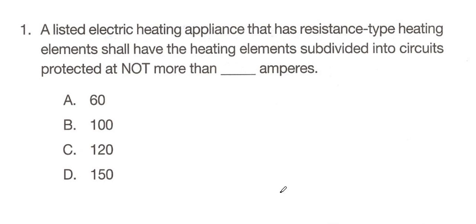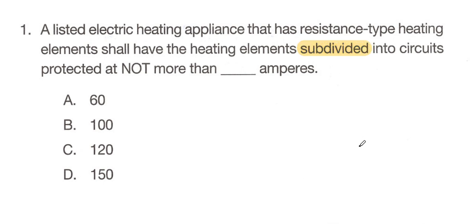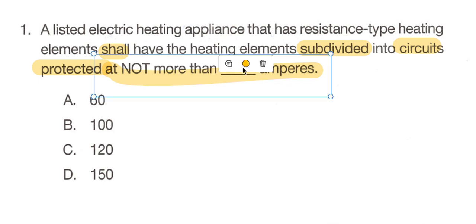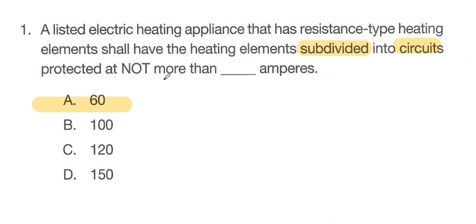Article 422.11(F) covers electric heating appliances employing resistance type heating elements rated more than 48 amperes — and all the answer choices here are more than 48, so we're still in the right direction. Continuing to read: each subdivided load shall not exceed 48 amperes, and each subdivided load shall be protected at not more than 60 amps. It says word for word "not more than 60 amperes." So A — 60 — is our answer.